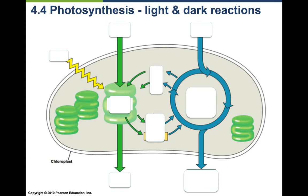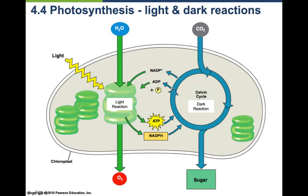To keep it simple: light comes in and hits the chlorophyll on the thylakoids. The light reaction takes place there, producing NADPH and ATP, which are pushed over to the dark reaction (Calvin cycle). CO2 comes in, sugar comes out. Water goes in, oxygen comes out. An electron transport chain converts ADP into ATP throughout this process.